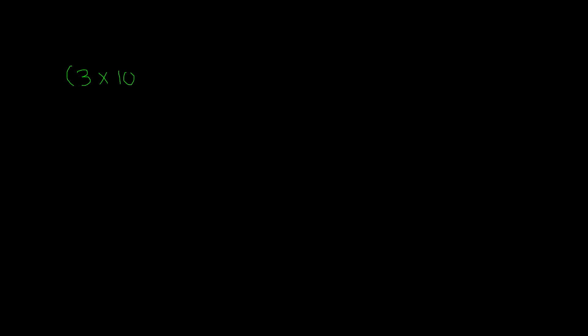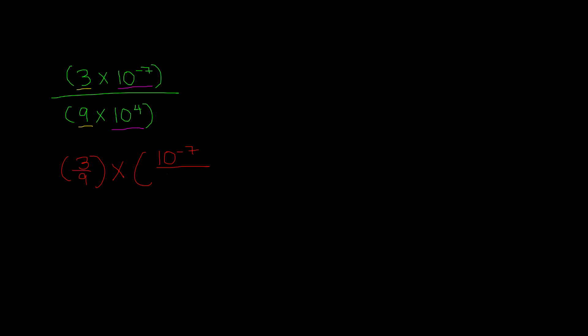Now let's do an example that involves division. We have 3 times 10 to the negative 7th power divided by 9 times 10 to the 4th power. When dividing, you do the same thing but you have to group them first. We have 3 and 9 as our constants, and 10 to the negative 7th and 10 to the 4th as our exponents. So we write this as 3 divided by 9, times 10 to the negative 7th divided by 10 to the 4th.